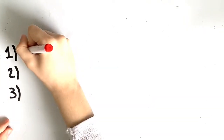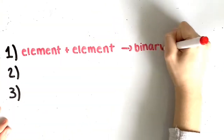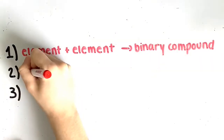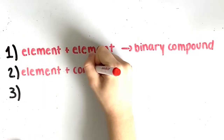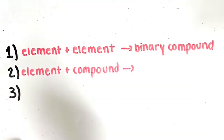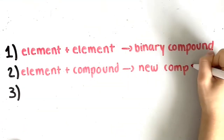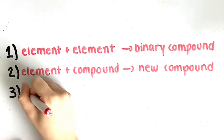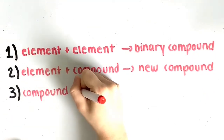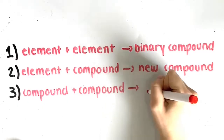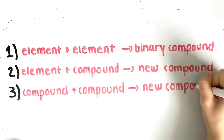Firstly, two elements forming a binary compound. Secondly, an element and a compound forming a new compound. And thirdly, two compounds forming a new compound.